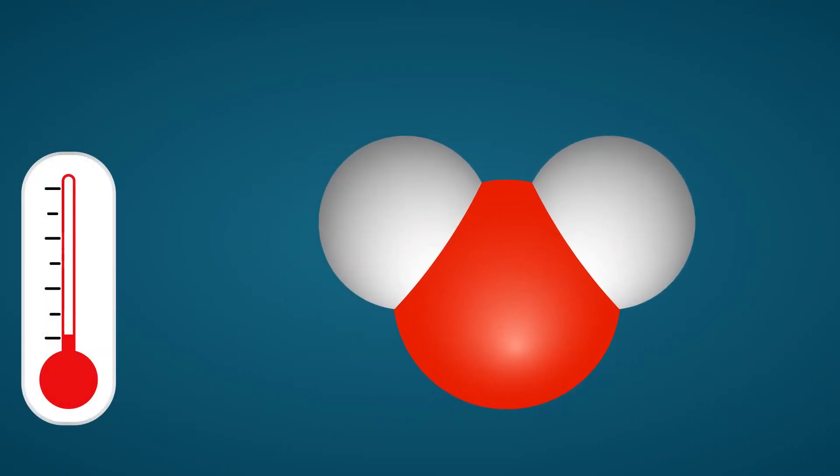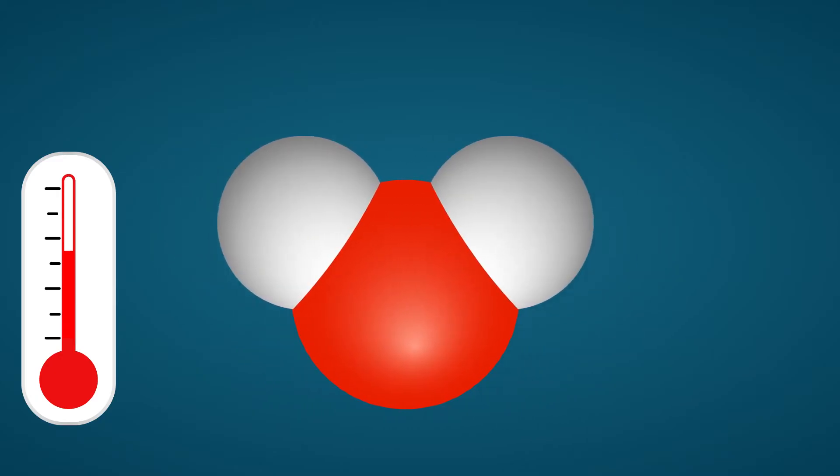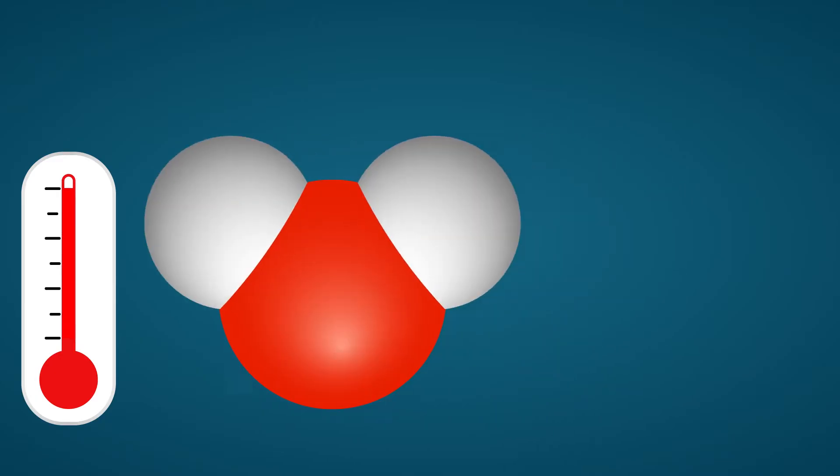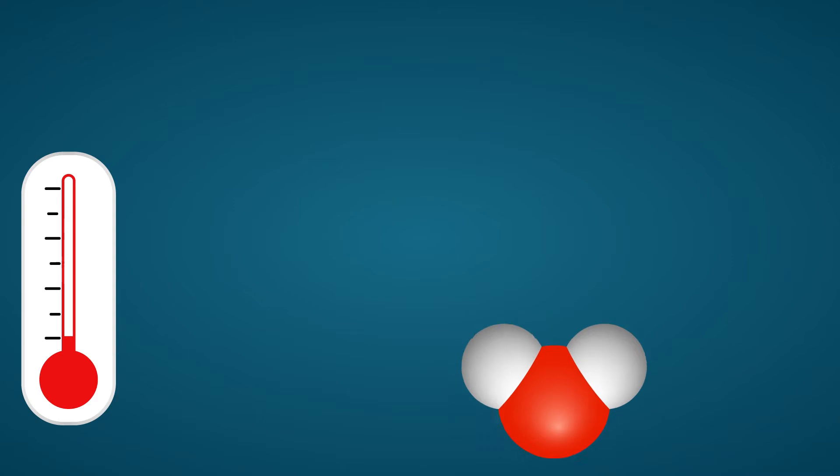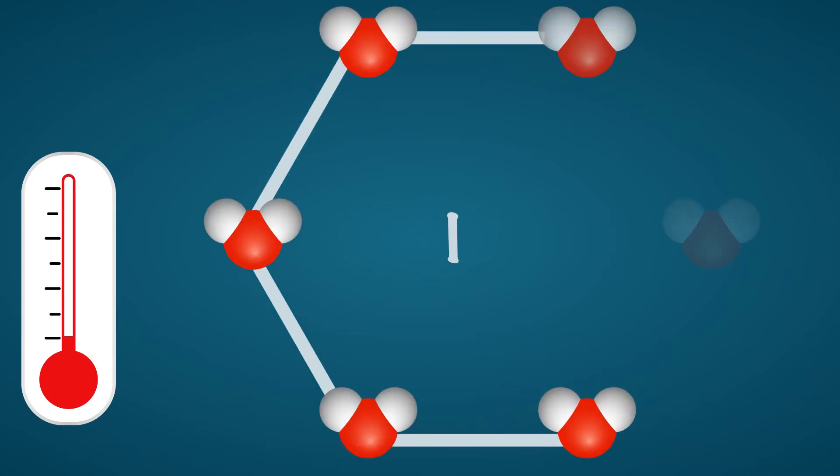The warmer this water molecule gets, the faster it will move. When water molecules are very cold, they arrange themselves into an orderly pattern with each molecule locked into a rigid position, forming ice. This is called freezing and happens at Earth's surface when it is colder than 0 degrees Celsius.